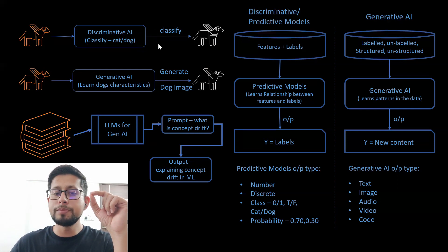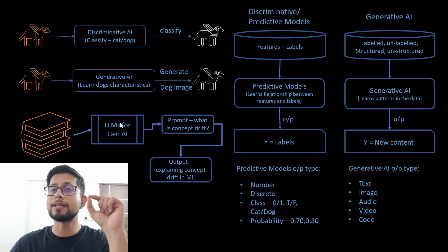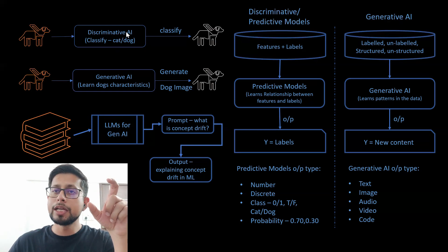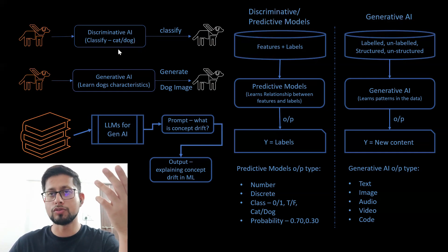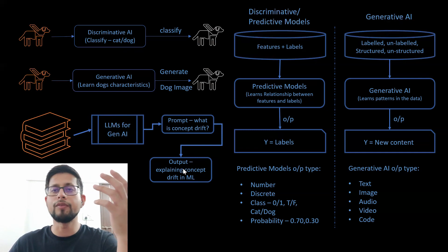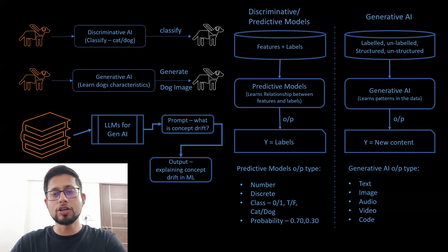So discriminative AI classifies objects, while generative AI generates text. For generative AI, the model must be an LLM — a large language model — trained on large amounts of data, otherwise outputs will not be accurate. In discriminative AI, depending on the problem, normal machine learning models or deep learning models can suffice, or LLMs can also be used. But for generative AI, LLMs are a must to produce accurate output.